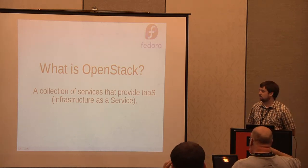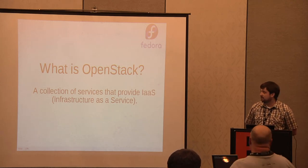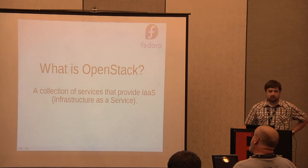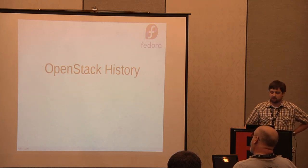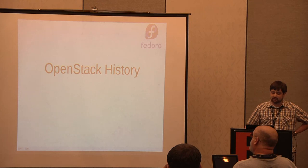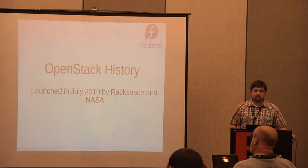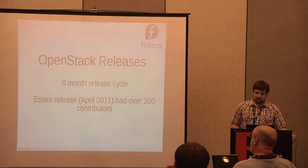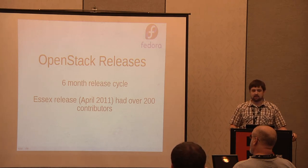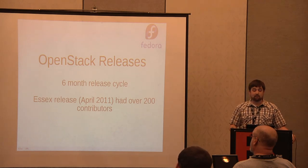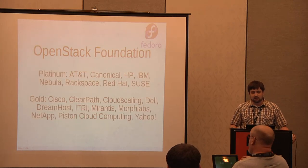He identified it as a service that provides virtual hardware — machines on demand. And it does provide that, and some other things too. Let's start looking at what specific services OpenStack provides. But first, let's talk about the history of the project, because it's pretty interesting. OpenStack was launched publicly in July 2010 by Rackspace and NASA. The project does six-month release cycles. The latest release, Essex, released in April, had over 200 contributors from 50 companies. In just a couple of years, the community is really exploding.